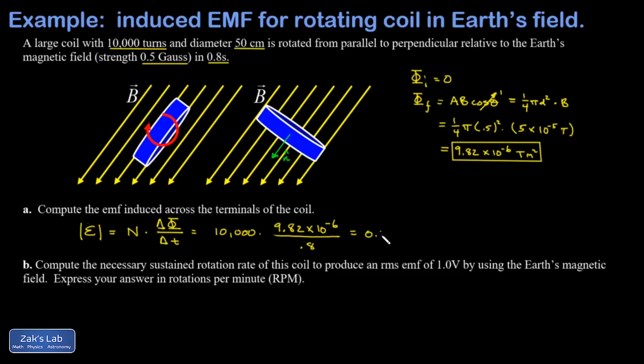In part B we're asked to compute the necessary sustained rotation rate of the coil to produce an RMS voltage, or EMF the way I said it here, of 1.0 volts by using the Earth's magnetic field. Now we're going to appeal to the generator formula. I'll post a link real quick to where this was derived, and I'm thinking about the sustained voltage that's produced by continuing this rotation over time.